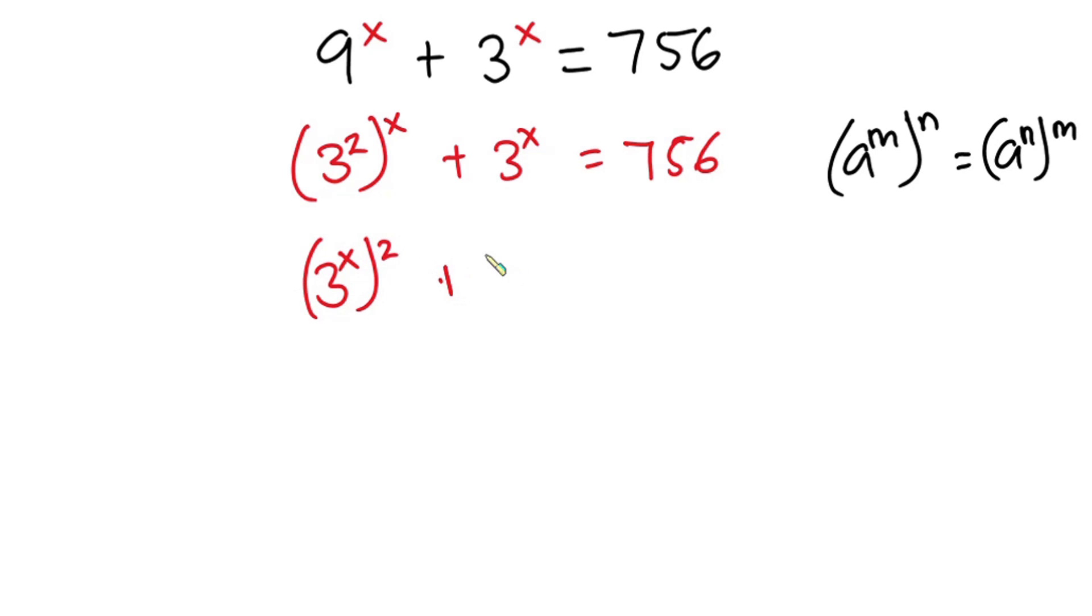Then plus 3 to the power x. Now let's go ahead and move this 756 to the left-hand side of the equation, so we have negative 756 and this is equal to zero.